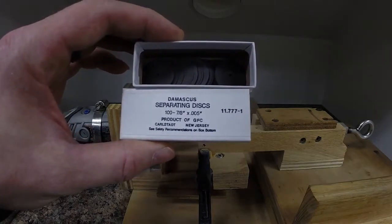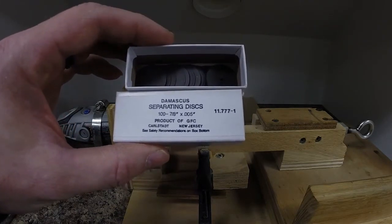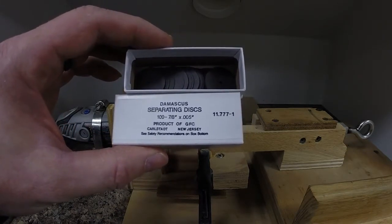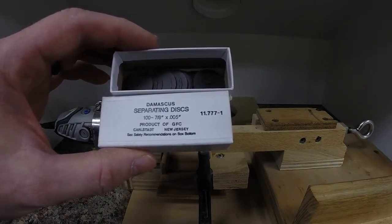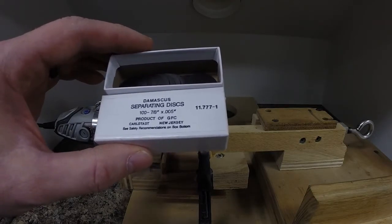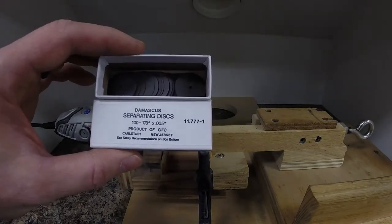It's a matter of preference which ones you use. I use both but most of the time I stick with the separating discs. I feel like they don't flex quite as much as the metal discs when you're cutting, resulting in a little bit more square cuts on your sections.